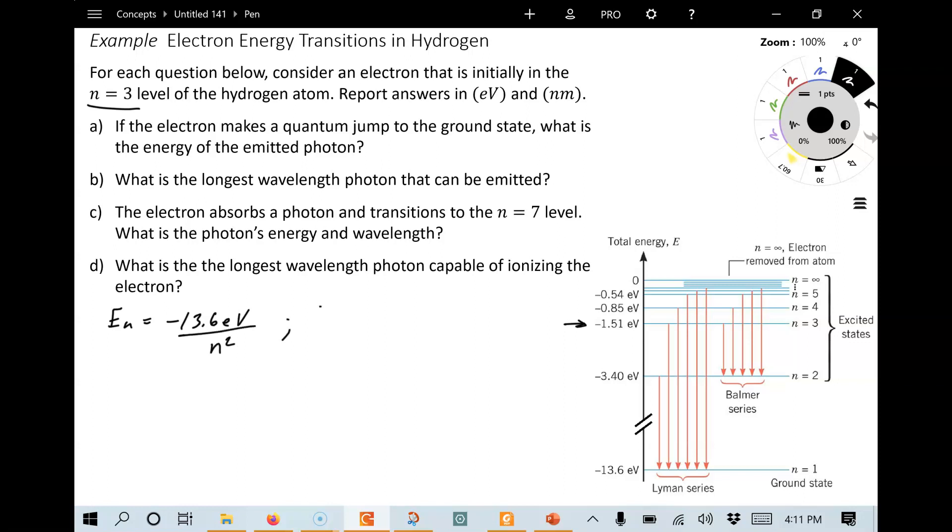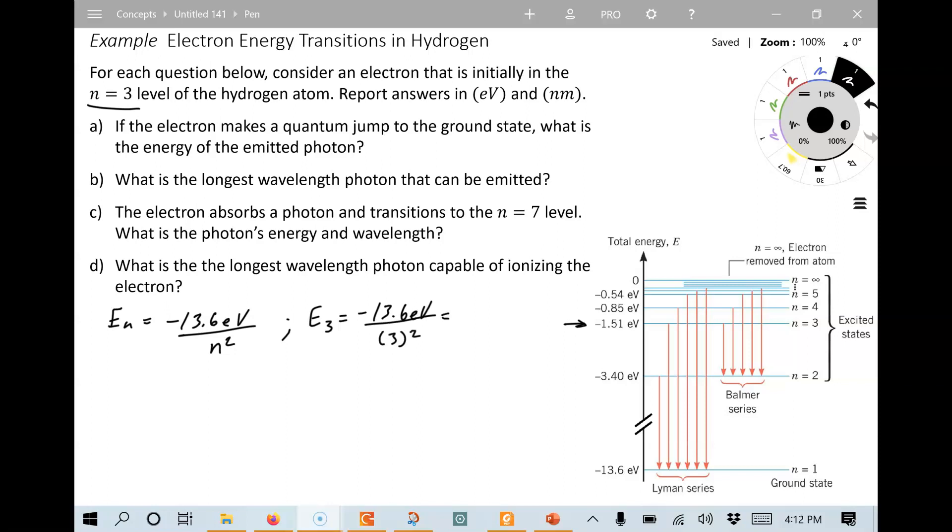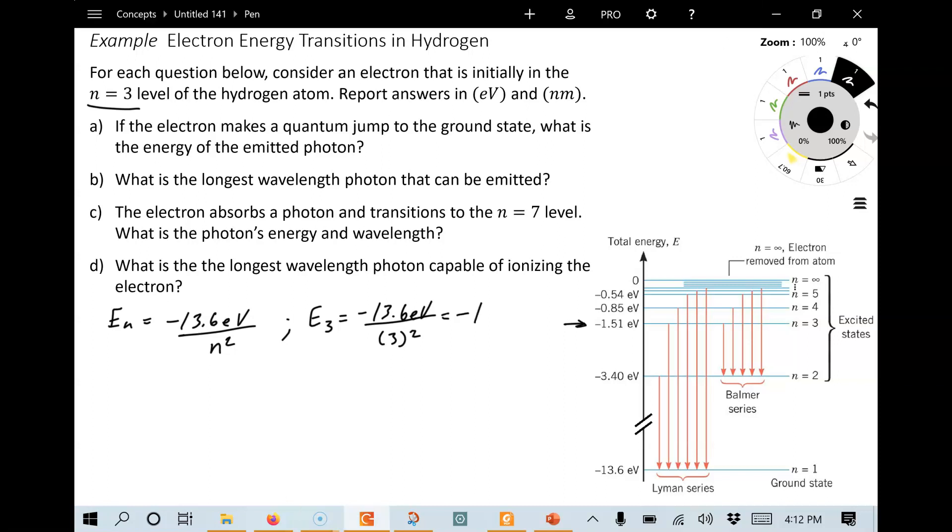E to the n is equal to minus 13.6 eV divided by n squared. And if we want to calculate E3, we can put in the number n equals 3, square it. And indeed, it comes out to minus 1.51 eV, as the diagram shows. Now, notice that for this energy level diagram, we've chosen the zero point here to be at the very highest level. And so all of the energies are referenced to that level. Lower than zero, they're all negative.